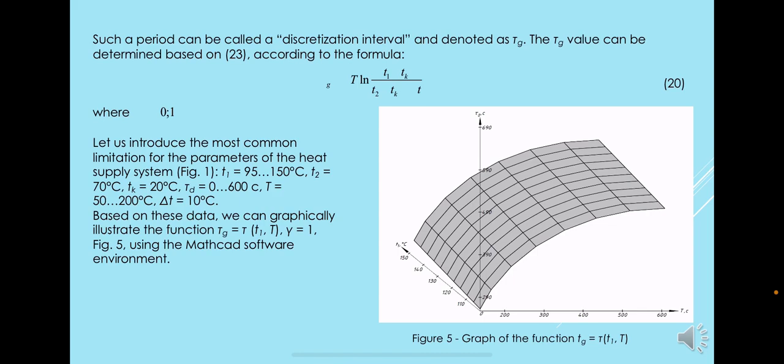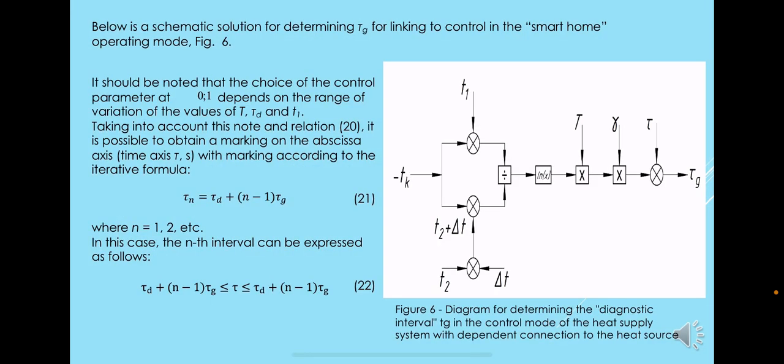Taking into account expression 20, we have this. From 23 it follows that inequality sets the so-called time interval for restarting the heat flow control algorithm with a dependent connection scheme, which allows to scan the heat supply state of a facility with a certain discretization period.